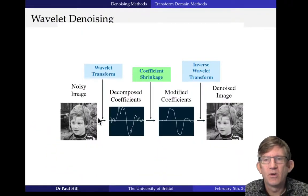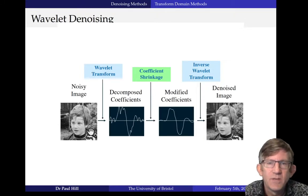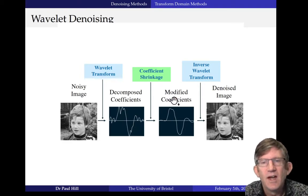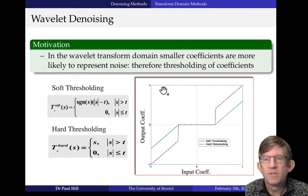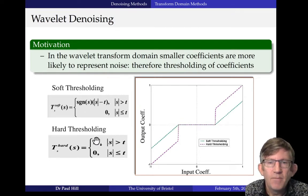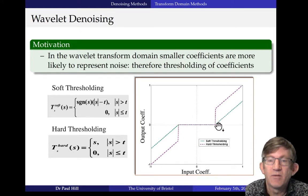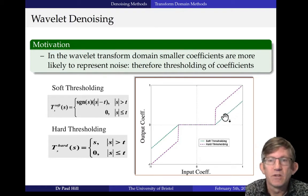To describe that in terms of an example: we have a noisy image, apply a wavelet transform, get the decomposed coefficients, then do coefficient shrinkage — a formal name for thresholding. Then we have the modified coefficients, apply the inverse wavelet transform, and get the denoised image. In terms of different types of thresholding: hard thresholding zeroes out anything within the range of positive and negative T. Soft thresholding is a kind of softer-landing approach where we actually modify the retained coefficients — the curve of transformation looks like this.